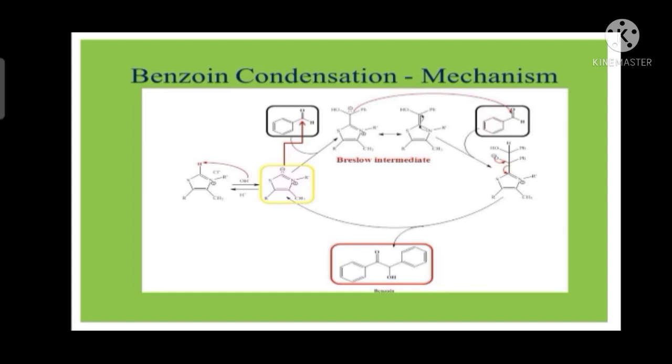This is the reaction mechanism of the benzoin condensation reaction by greener method or using thiamine. First of all, this is the structure of thiamine. Here the R' represents the pyrimidine ring and R represents the part which contains the OH. The first step of the reaction is in presence of OH-, the acidic proton will be removed and it will form a carbanion.